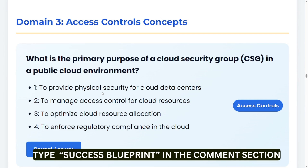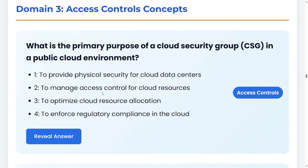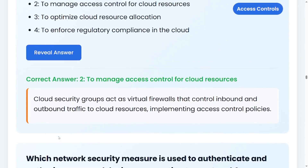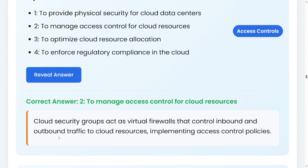The third domain we are looking at is Access Control Concepts. What is the primary purpose of a cloud security group in a public cloud environment? Options include: to provide physical security for cloud data centers; to manage access controls for cloud resources; to optimize cloud resource allocation; or to enforce regulatory compliance. The correct answer is two: to manage access controls for cloud resources. Cloud security groups act as virtual firewalls to control inbound and outbound traffic to cloud resources, implementing access control policy.